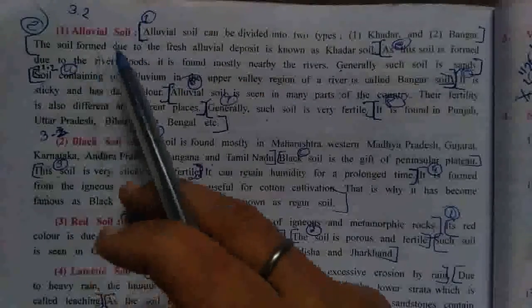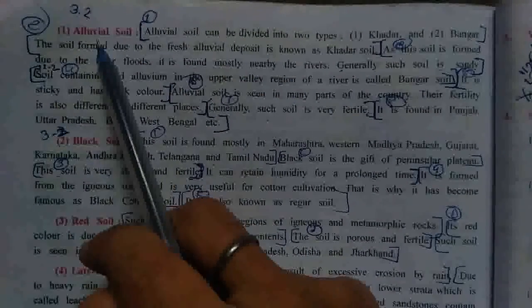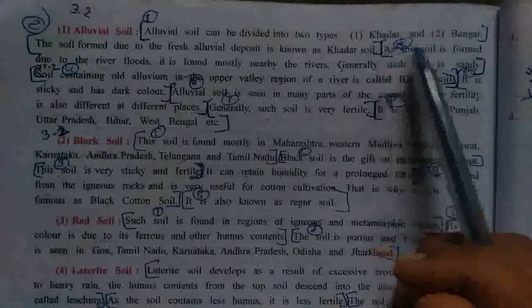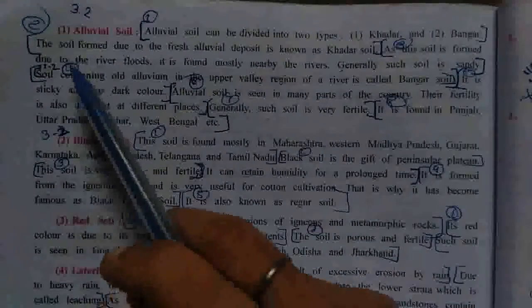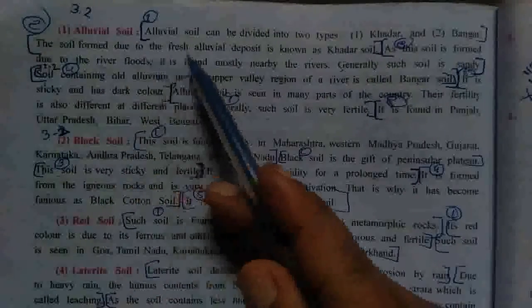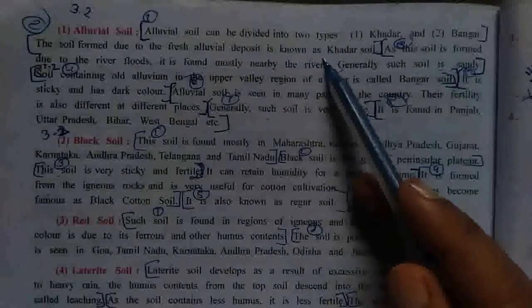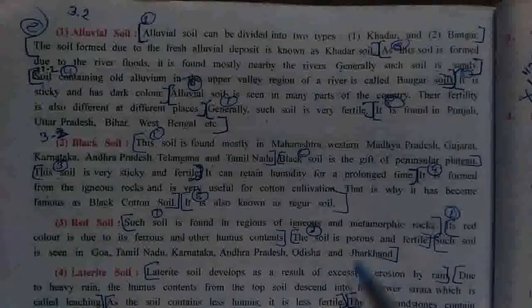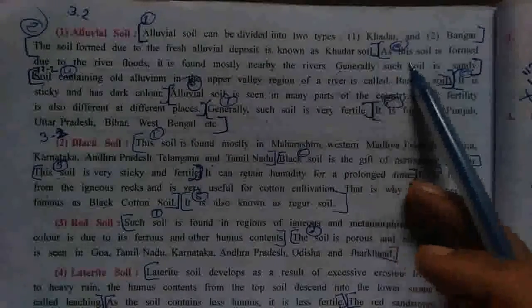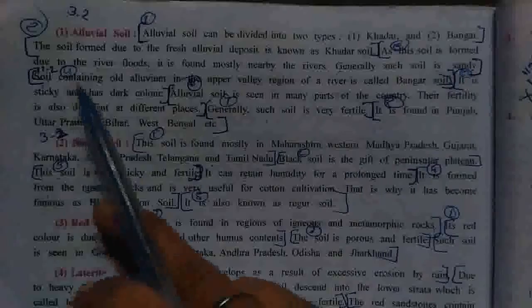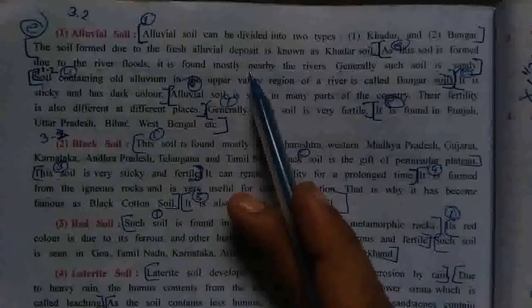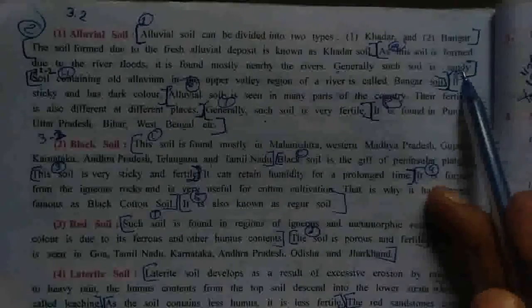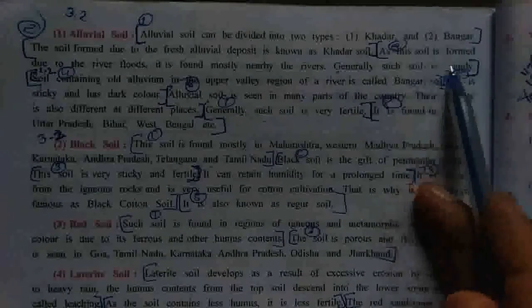Now, सबसे पहले alluvial soil के बारे में study करेंगे. Alluvial soil can be divided into two types: Khadar and Bhangar. The soil formed due to fresh alluvial deposit is known as khadar soil. जो fresh alluvial deposit होता है river form की वजह से, उसको khadar soil कहा जाता है. As this soil is formed due to river flood, it is found mostly near rivers. Generally, such soil is sandy.